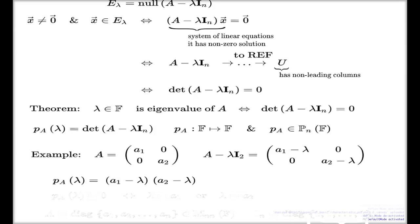A1 take lambda, A2 take lambda. And given that the eigenvalues are solutions to the characteristic polynomial is my two solutions, a1 and a2.